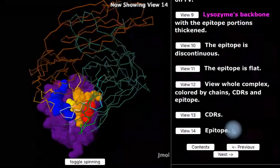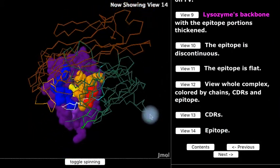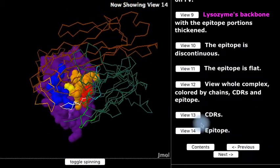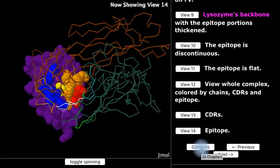Now, looking through a thin backbone trace of the FAB, we see the discontinuous epitope of the lysozyme antigen.